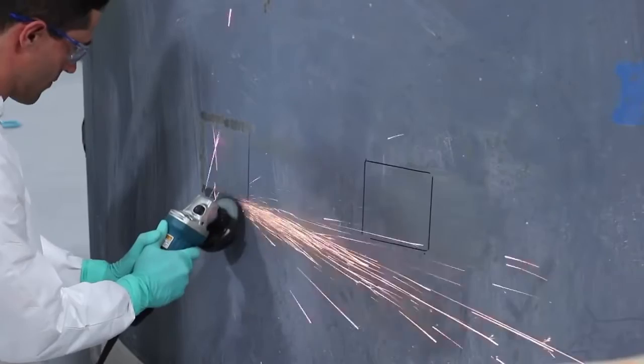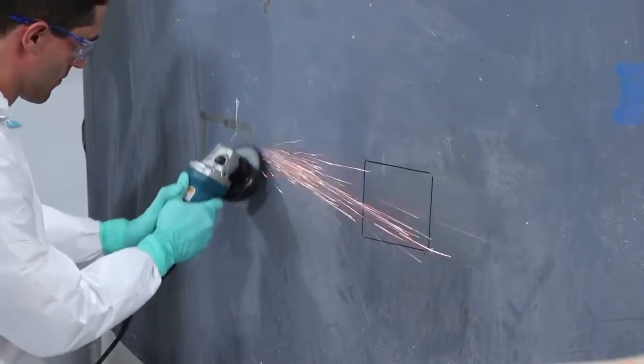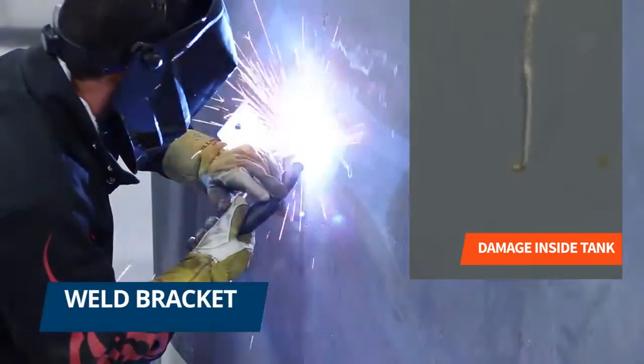For the welded bracket, we prepared the surface area outside the perimeter since welding is done at the edges. We then proceeded to weld the bracket.